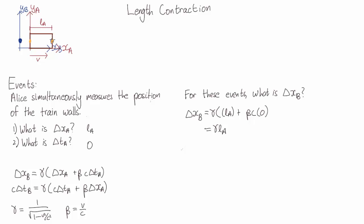So then the distance delta xb between these events in Bob's frame is this, which is clearly bigger than the length of the train in Bob's frame.